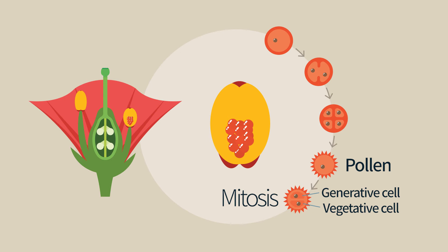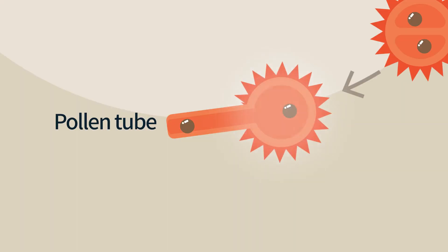Once the pollen grain has landed on the stigma, the vegetative cell will grow the pollen tube. This tube grows through the style and reaches the ovule. The generative cell undergoes a second mitotic division, so that when the pollen tube reaches the ovule, it contains three cells: the vegetative cell, that does not take part in fertilization, and two generative cells.